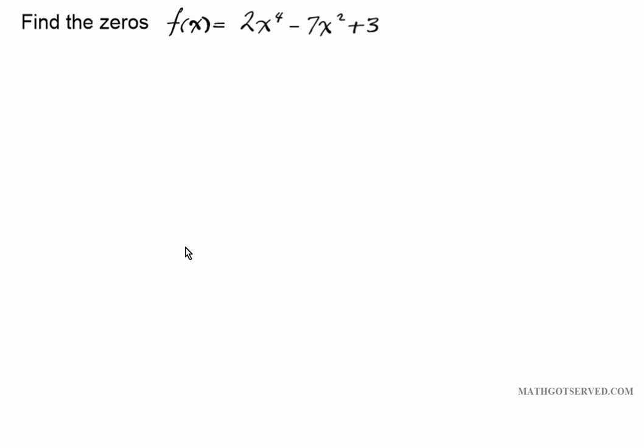So let's say we were to find the zeros of the polynomial function f equals 2x to the fourth minus 7x squared plus 3. If you notice this is a fourth degree polynomial but the procedure for solving a polynomial of this nature, for finding the roots or zeros, is very similar to that of a basic quadratic trinomial.